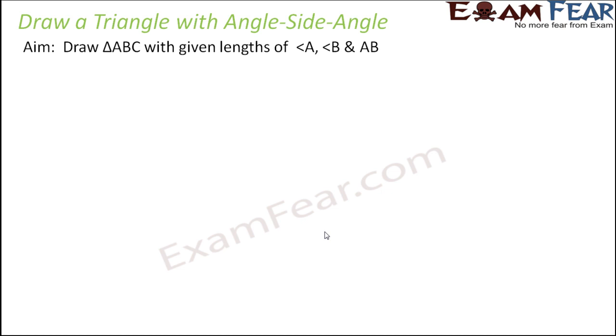If you can imagine a triangle like this, let's say this is A, this is B and this is C. So in this triangle, if you know the length of AB and you also know the measurements of angle A and B, then you can easily draw this triangle.